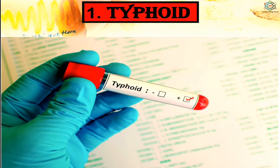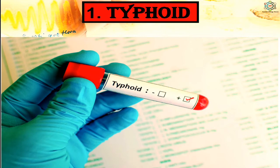Preventive measures for typhoid include proper community sanitation, screening of water supply and food from contamination by flies, and personal cleanliness. Cooks and food handlers in eating establishments should not be carriers of the typhoid bacteria. Typhoid cases should be immediately reported to health authorities. Natural calamities such as floods and hurricanes may cause epidemics. Typhoid vaccine provides immunity for about three years.